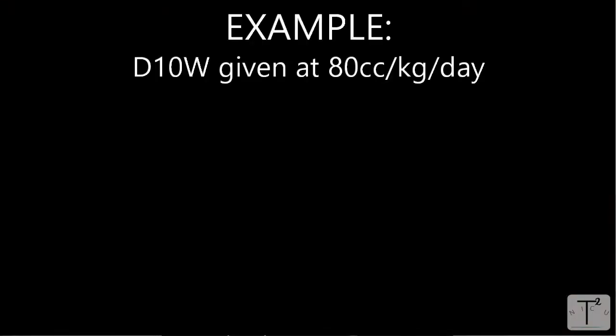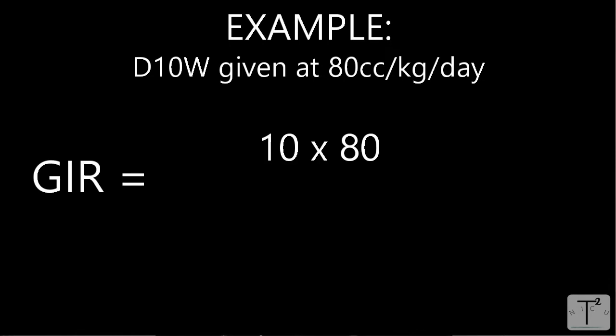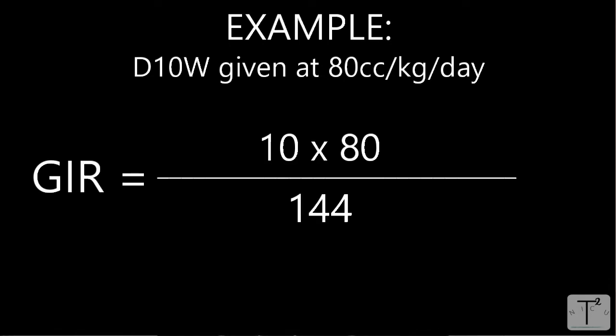Let's go through a couple of examples. Let's say you have a baby that you're giving D10W to at 80 cc's per kilo per day. What is the G.I.R.? The G.I.R. is equal to 10 times 80 divided by 144, which equals 5.55.